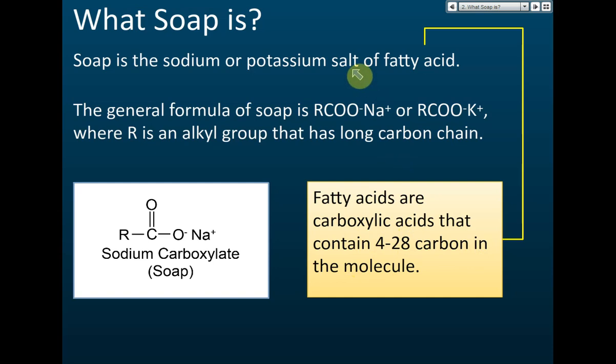Since soap is a salt, let's recall what a salt is — we learned this in Form 4. Salt is the product of neutralization, but it is not necessary that it must always come from neutralization. Salt is an ionic compound, where the positive ions and negative ions are present. In an ionic compound, you must have both positive and negative ions. The positive ions come from the alkali, and the negative ions come from the acid.